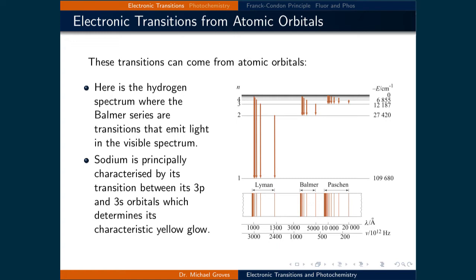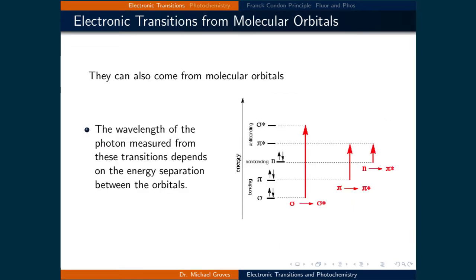We have already quantified many examples of electronic transitions. For example, when discussing the hydrogen atom, we quantified the electronic transitions between energy levels using concepts developed by Bohr, as well as the Schrodinger equation, which both gave similar results to the empirically determined relationship provided by the Rydberg equation. We have also looked at electronic transitions in molecules by examining the structure of the molecular orbitals.